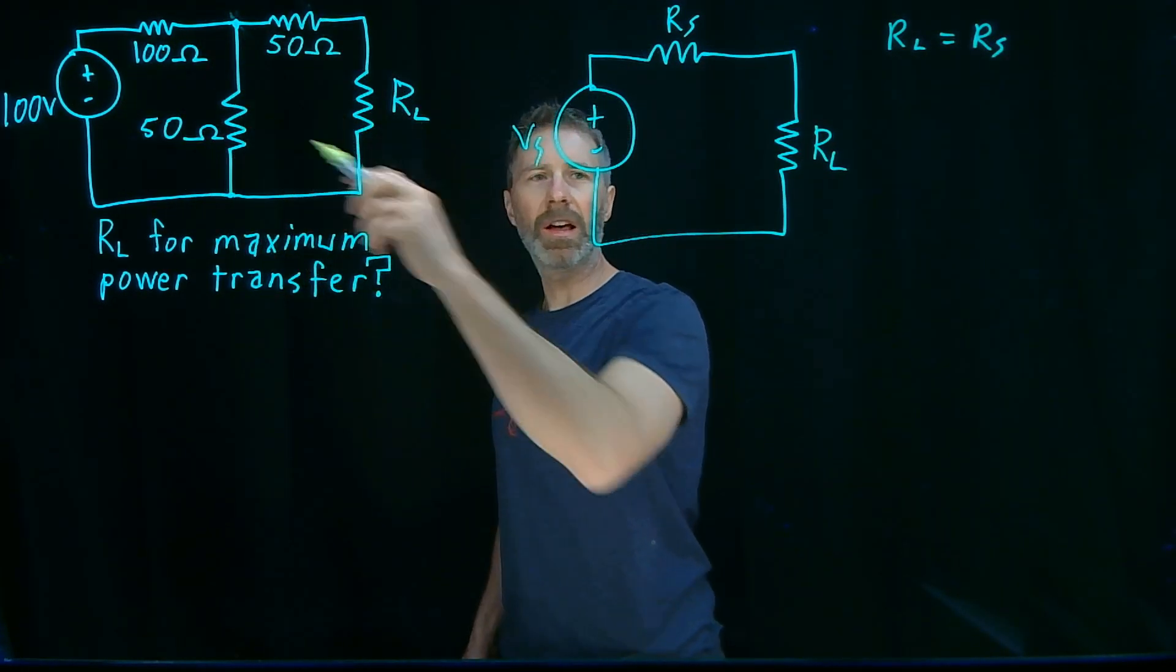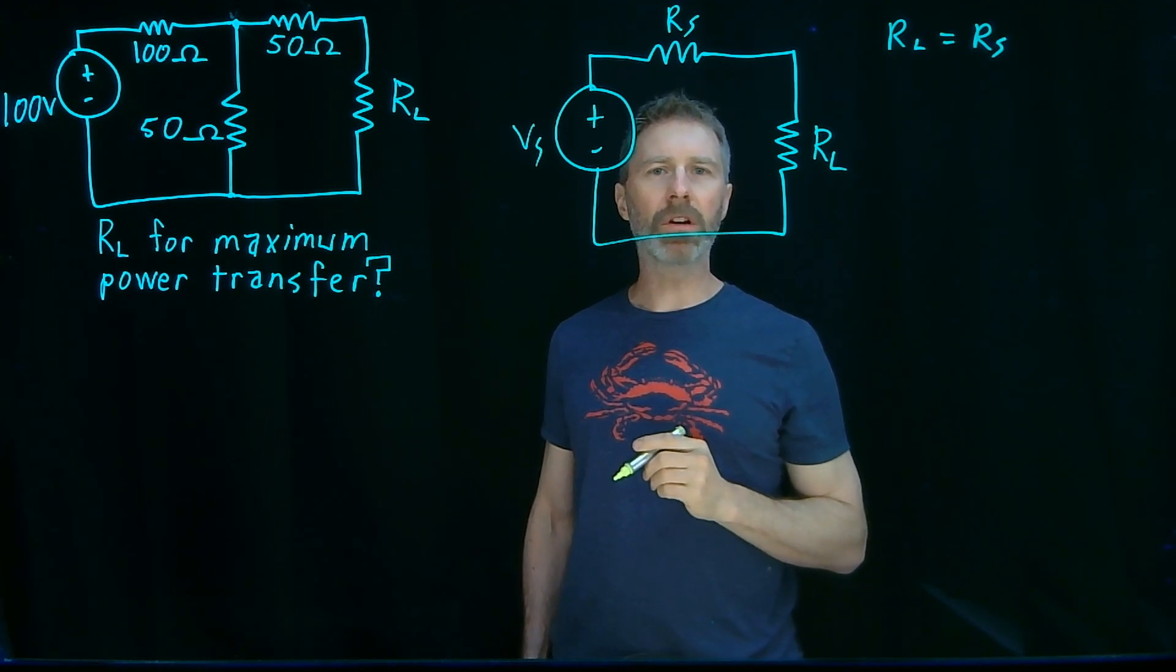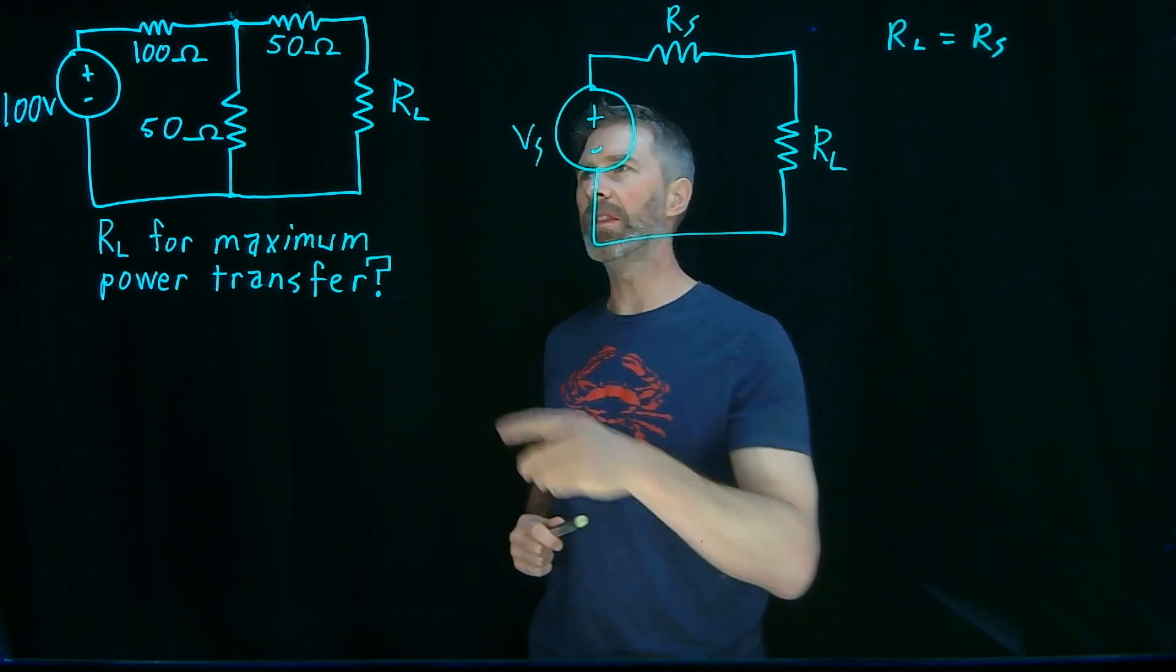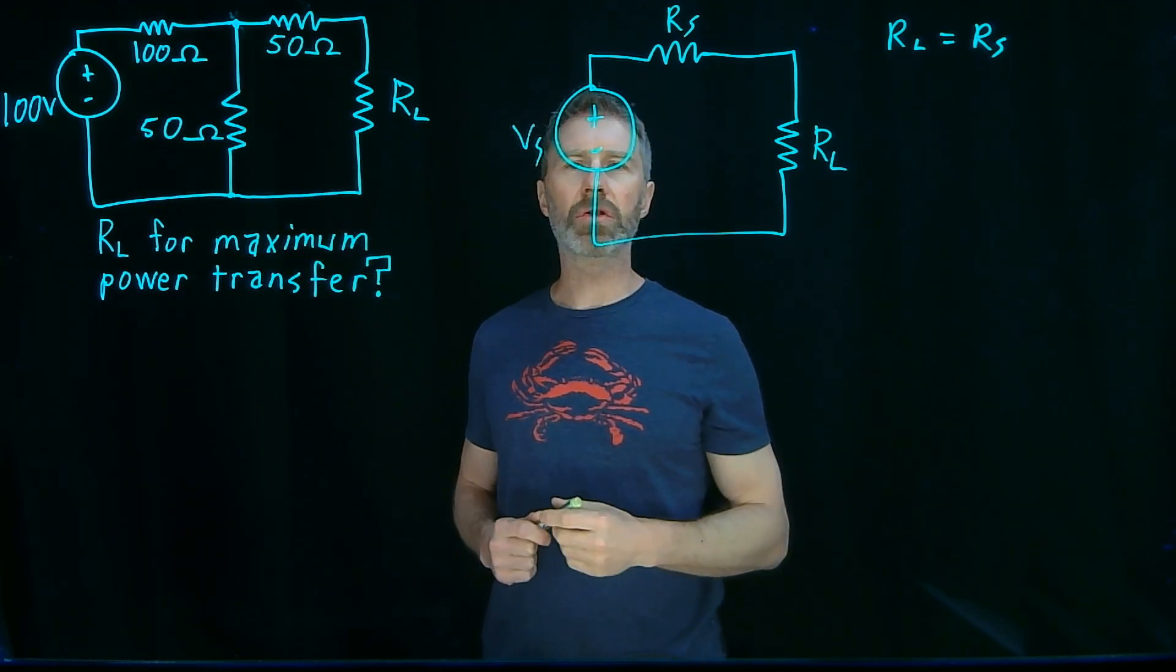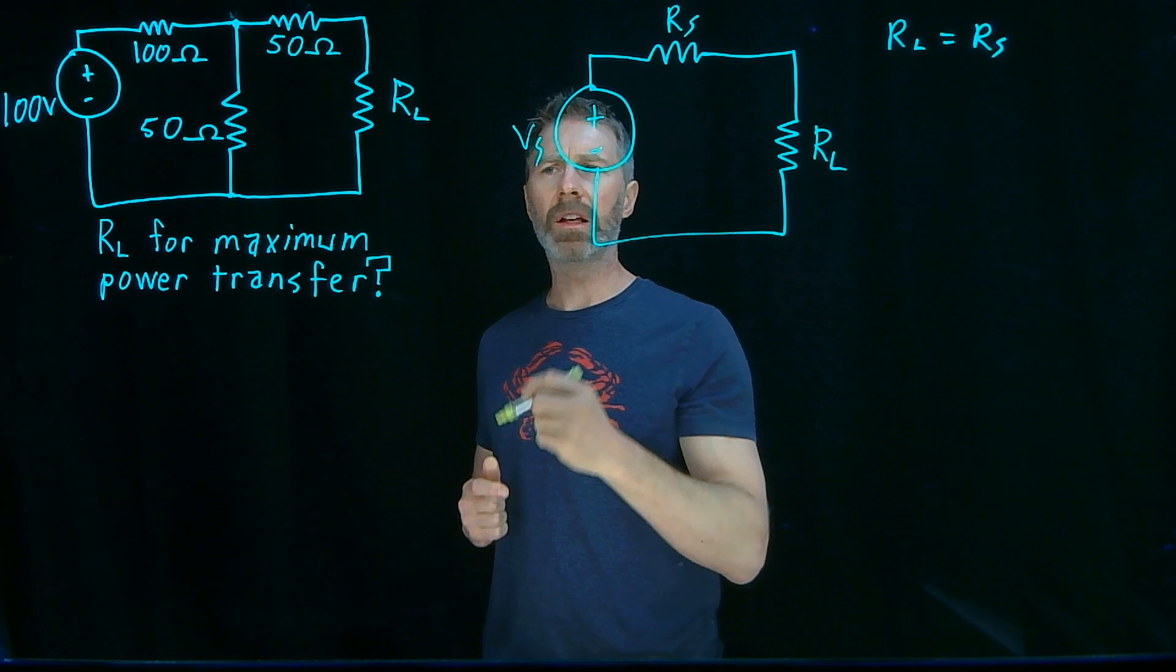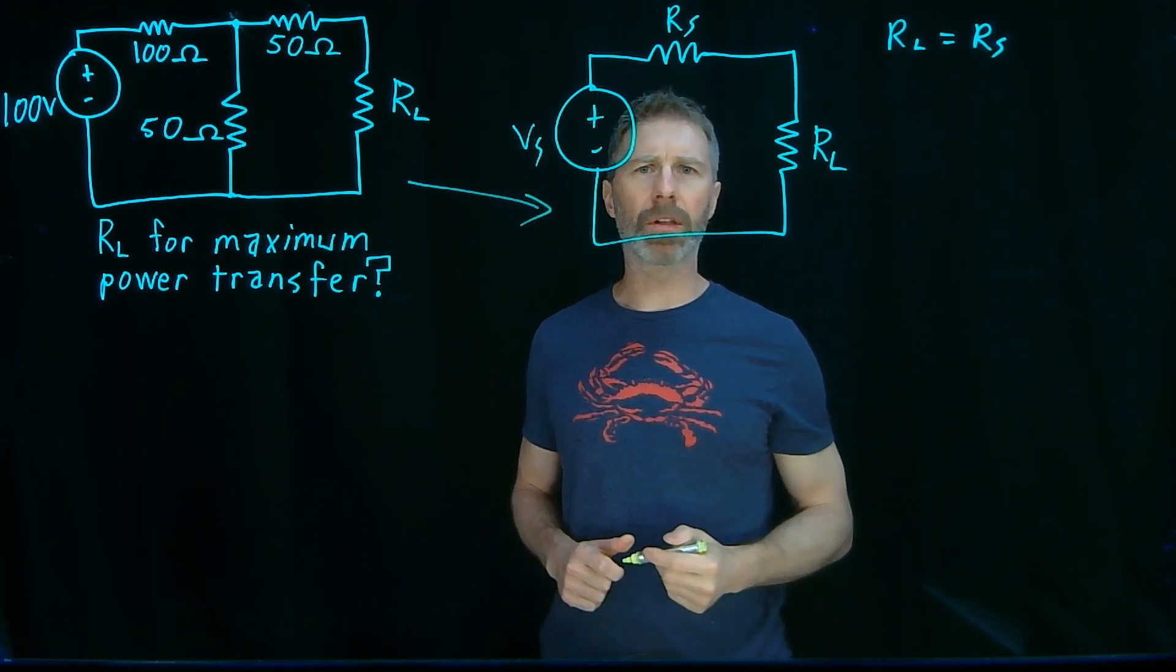And this doesn't have the form of this. But fortunately, we know that any circuit that's in this form where it has voltage sources or even current sources and resistors, we can transform that circuit into a version that looks like this. And that's, of course, Thevenin's theorem.